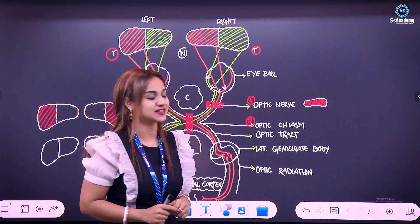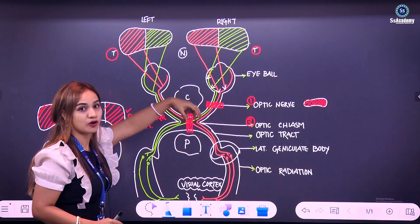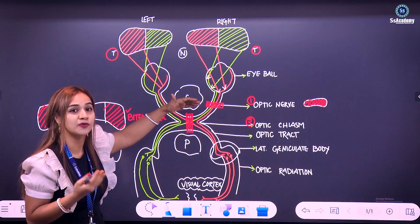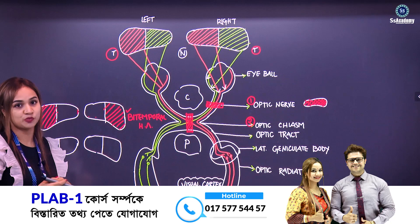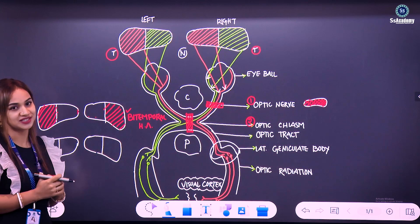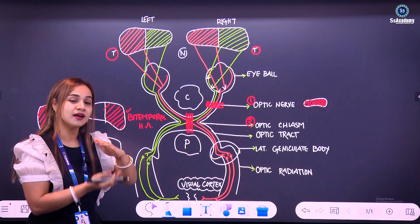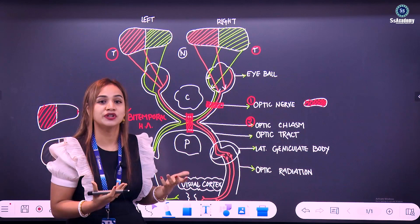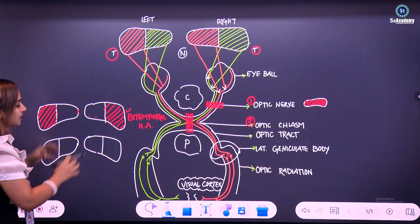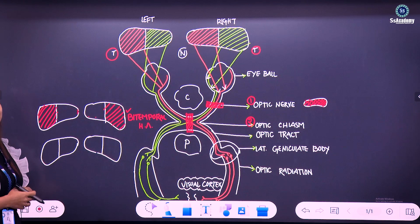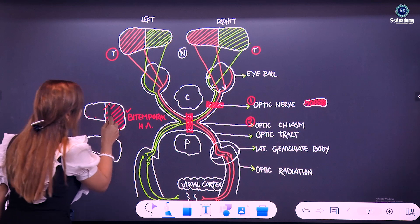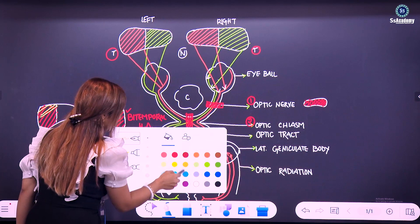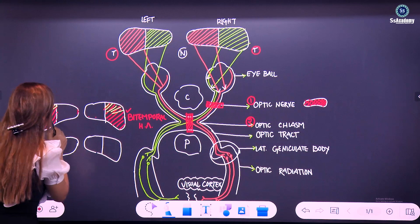In craniopharyngioma, which presses the upper fibers of the optic chiasm — and these upper fibers are responsible for the lower field of vision — the lower field of vision will be more affected than the upper field. Similarly, the pituitary tumor pressing the lower fibers — responsible for the upper field of vision — means the upper field of vision will be more affected. Recap: pituitary tumor → lower fibers → upper field of vision affected. Craniopharyngioma → upper fibers → lower field of vision affected.